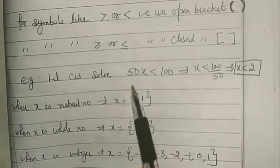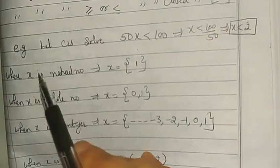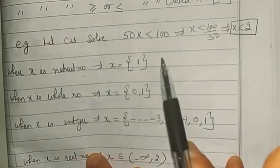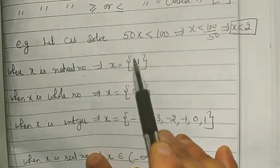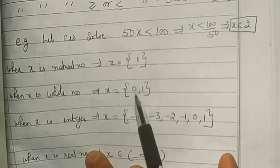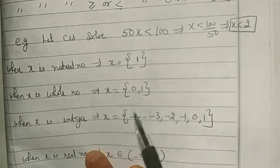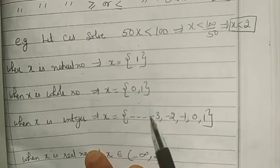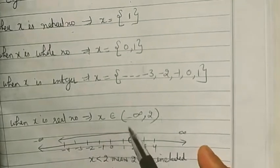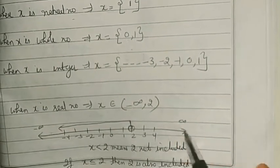For example, solve 50x < 100. Dividing both sides by 50 gives x < 2. Now let us see how to express the solution in different cases. If x is a natural number, the only solution is x = 1. If x is a whole number, the solutions are 0 and 1. If x is an integer, solutions are all integers less than 2: …, -3, -2, -1, 0, 1. If x is a real number, we cannot list all values since real numbers extend from minus infinity to plus infinity, so we use interval notation.